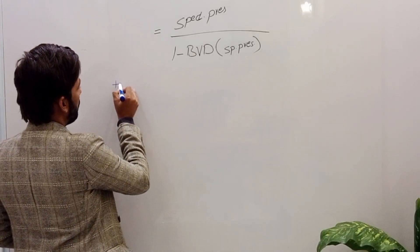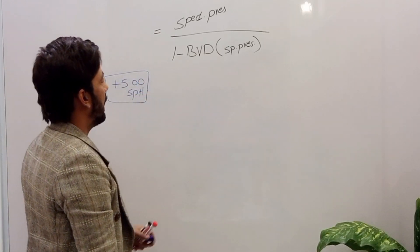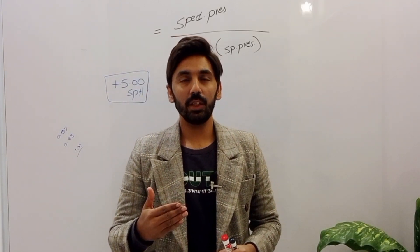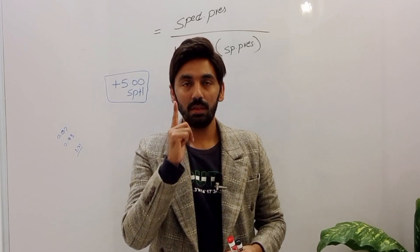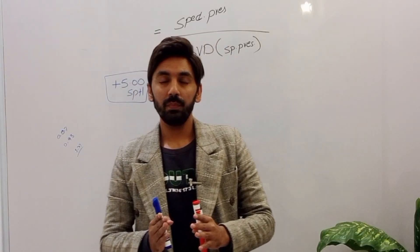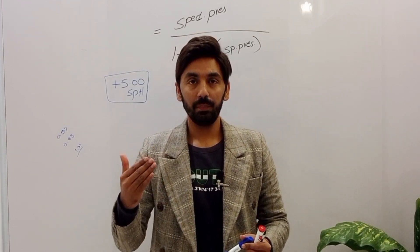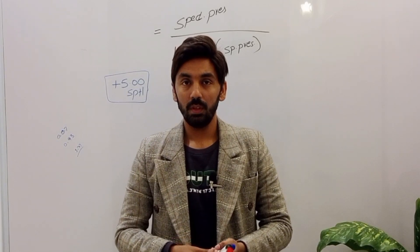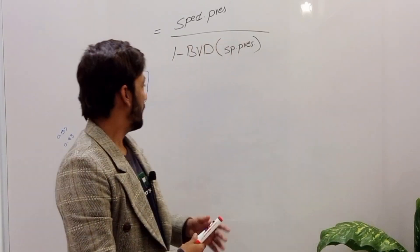For example, the patient's spectacles prescription is plus five spherical. Back vertex distance is the distance between the anterior surface of the cornea and the posterior surface of the spectacles lens. You have to be very careful regarding back vertex distance when dealing with high prescriptions — more than minus five or more than plus five spherical — because back vertex distance can significantly affect your prescription.